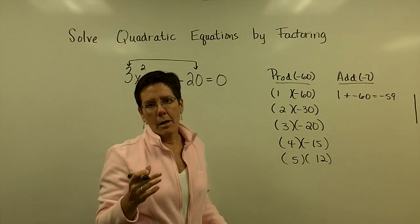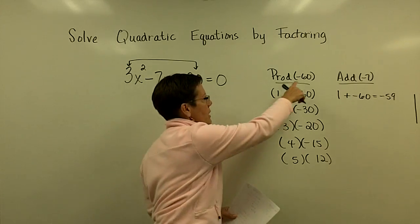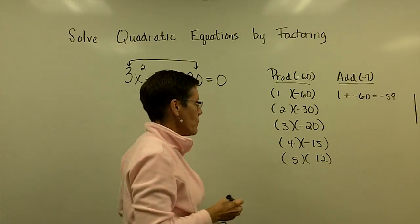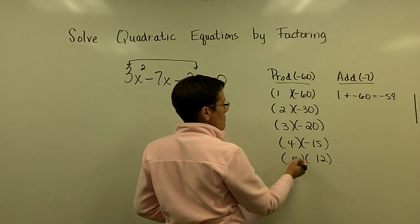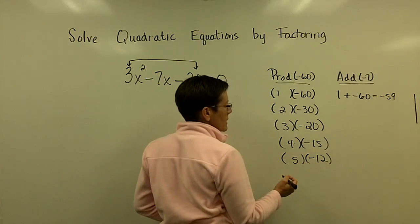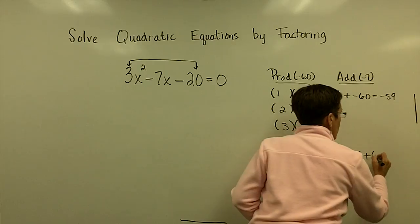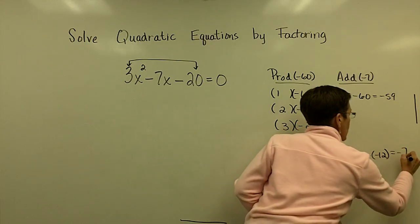We're not always as fortunate where the number we're looking to find two factors for is divisible by practically every integer as we go on up. That doesn't always happen. But 5 times 12 is 60, and I'm going to put my negative sign here and I think I've hit it. I think 5 and negative 12 add to be negative 7.